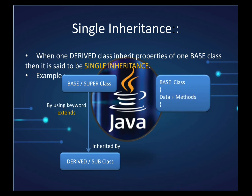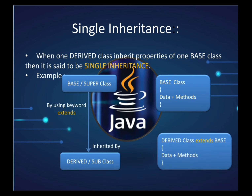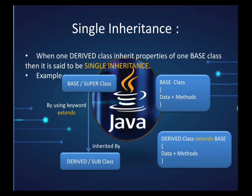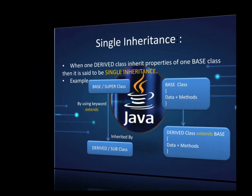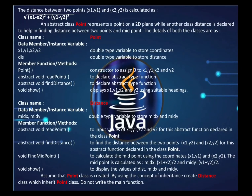In the base class we write data and methods, and it is inherited by the derived class using the extends keyword. The syntax is: derived class name, then extends, then base class name.